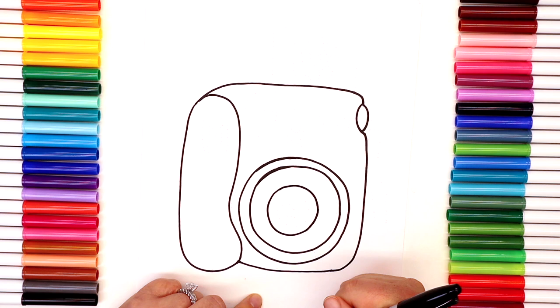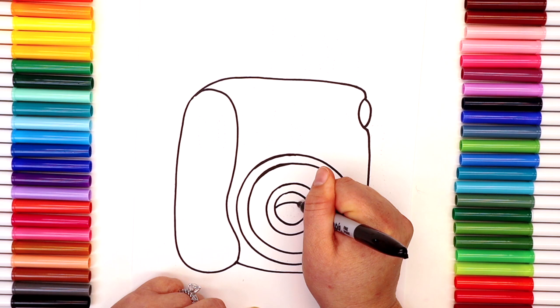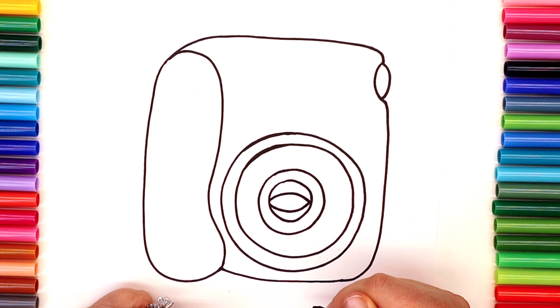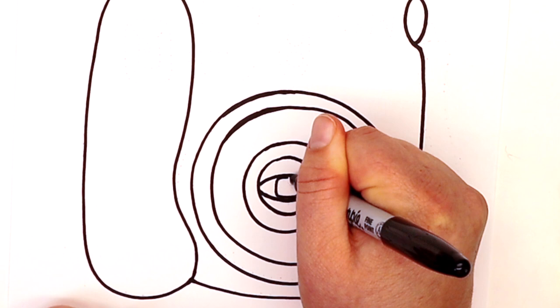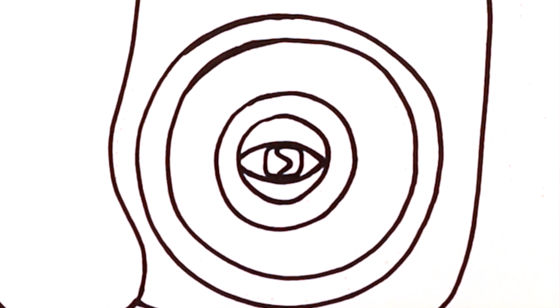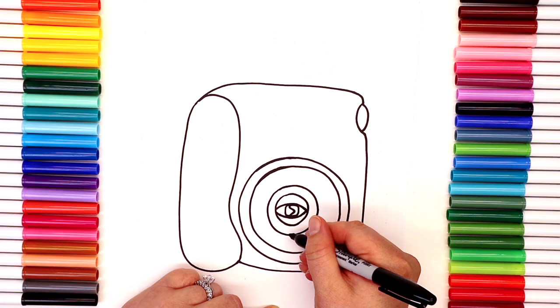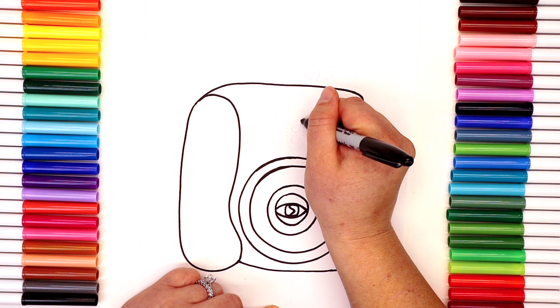Now we're going to add on the shutter. Actually, it's kind of funny—it looks like the shape of an eye. Do you guys see that? Or an almond or football. You guys got these next few steps, they're pretty easy.